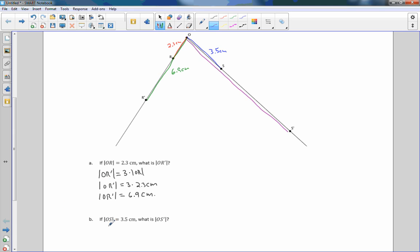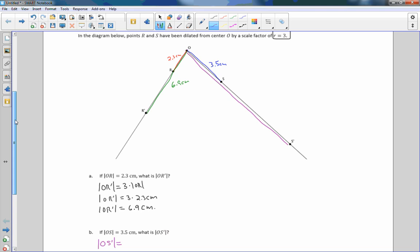So I'm going to write the formula. OS prime, the length of OS prime, equals our scale factor. Let me bring that back up there so I can see it. Our scale factor of 3 times the segment we're dilating, which is 3.5 centimeters. But before I do that, I need to write it as the name, write the formula, 3 times our segment OS.